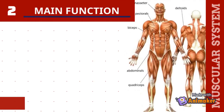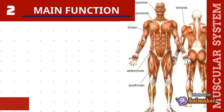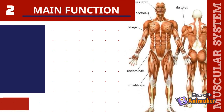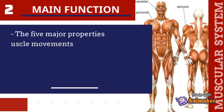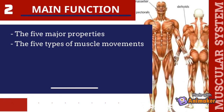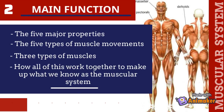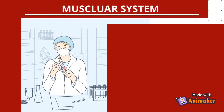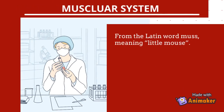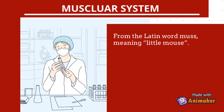This topic will be covering the main functions of the muscular system, the five major properties, the five types of muscle movement, three types of muscles, and how all of this work together to make up what we know as the muscular system. Scientists long ago dubbed the muscles from the Latin word 'mus,' meaning 'the little mouse.'